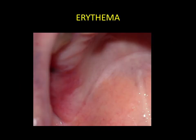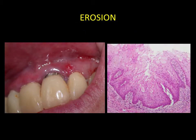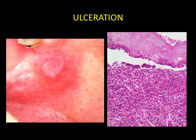Erythema. This corresponds to vascular proliferation, which produces tissue redness that becomes gradually less pronounced with distance from the zone of inflammation. Erythema must be distinguished from erosions, also red, and characterised by loss of intraepithelial substance.